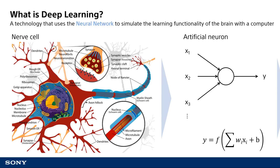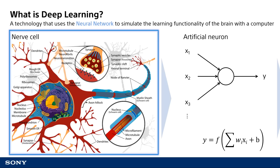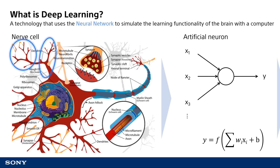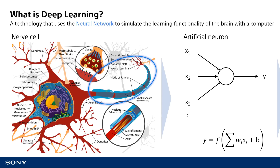In a nutshell, deep learning is a technology that uses the neural network to simulate the learning functionality of the brain with a computer. It is believed that there are more than 100 billion nerve cells in our brains. These nerve cells receive electrical signals from other nerve cells through a branch-like part called a dendrite, and transmit electrical signals to the next nerve cell through the axon when the received signals are above a certain level. The strength of the synaptic connections determines how easily the electrical signal from one nerve cell is transmitted to the next, and it is believed that these nerve cells exchange electrical signals to achieve intellectual functionality.